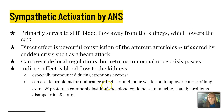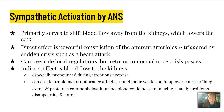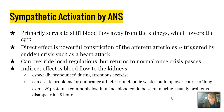Sympathetic activation by the autonomic nervous system primarily shifts blood flow away from the kidneys, lowering GFR. The direct effect is powerful constriction of afferent arterioles triggered by a sudden crisis like a heart attack; this can override local regulation but returns to normal once the crisis passes. The indirect effect on blood flow to kidneys is especially pronounced during strenuous exercise, which can create problems for endurance athletes like marathon runners or long-distance swimmers, since metabolic waste builds up. Protein may be lost in the urine and blood may be seen, but problems usually disappear within 48 hours. If they persist, it could indicate renal failure.